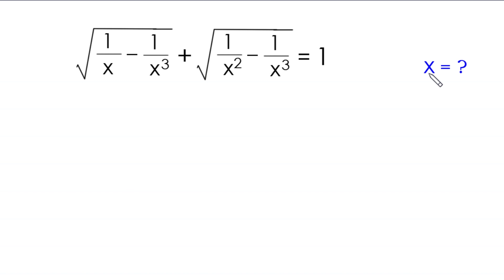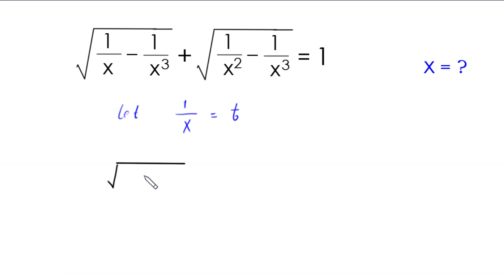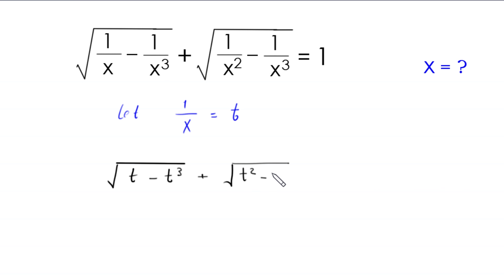So let us start. First, we suppose that 1/x is equal to t. So this equation will become: square root of (t minus t³) plus square root of (t² minus t³) is equal to 1.